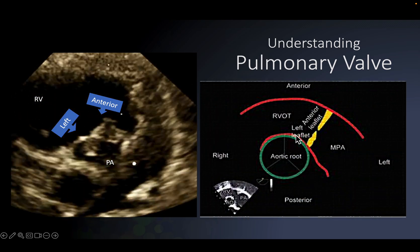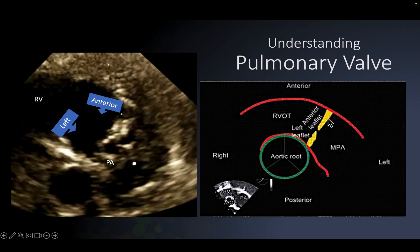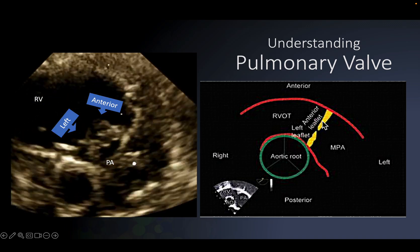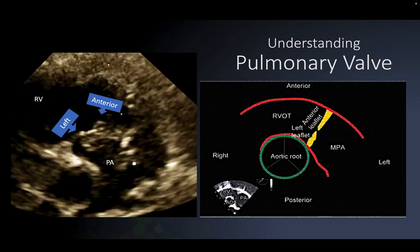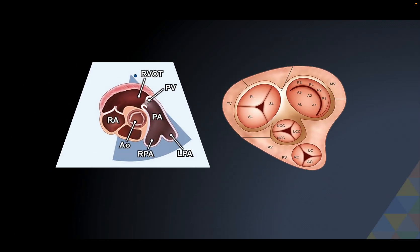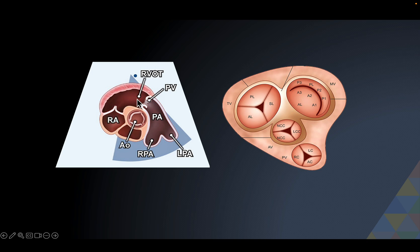In the cross-section view, you have the aorta and RVOT with an anterior leaflet and a left leaflet. I'm discussing the anterior and left leaflets because we can actually see all of them - don't be surprised. In the parasternal short axis view at the level of the aortic valve SAX, you can see the right atrium, interatrial septum, right ventricular outflow tract, pulmonary valve, and pulmonary artery - here is the anterior pulmonary leaflet and the left pulmonary leaflet.